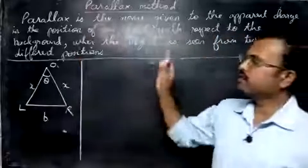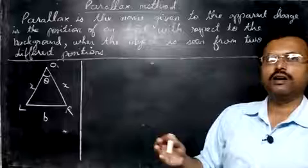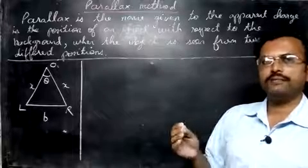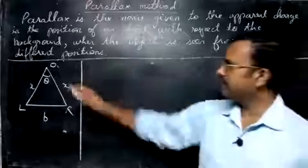So this method is useful for finding the distance of very long distance. That is the distance of the moon or distance of planets and all. Suppose you want to find the distance of the planet Mars, we can easily use the method to find the distance there. Let us go with the definition now.